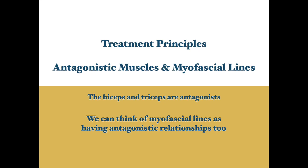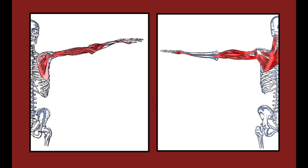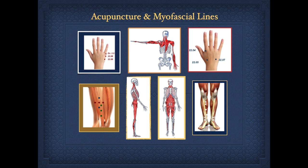A simple example of antagonists is the bicep and the tricep. When the bicep contracts, the tricep lengthens. We have these antagonistic muscle groups all over our body. What I want to introduce you to is that it's really helpful to think of myofascial lines in a similar way.